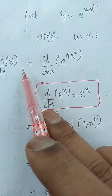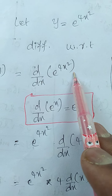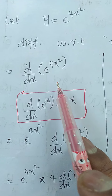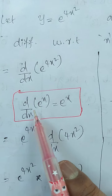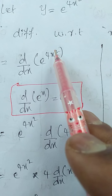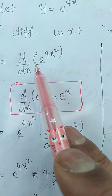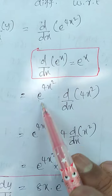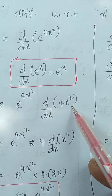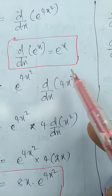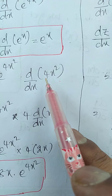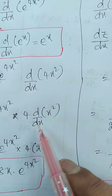We get d/dx of y = d/dx of e to the power of 4x². d/dx of e to the power of 4x² is in the form of d/dx of e to the power of x. The derivative of e to the power of x is e to the power of x — this is the standard formula. Here 4x² is treated as x, so we can write it as e to the power of 4x² multiplied by the derivative of 4x². The derivative of 4x² can be written as 4 into derivative of x².